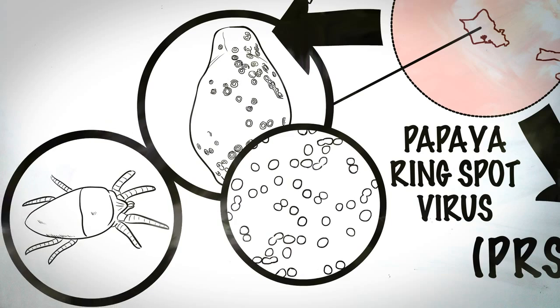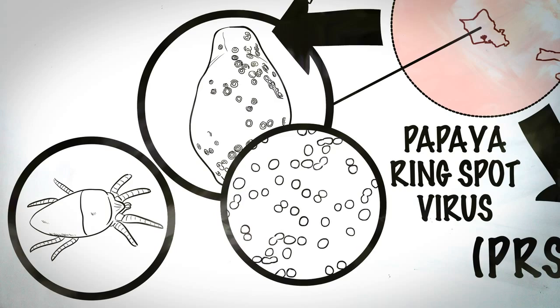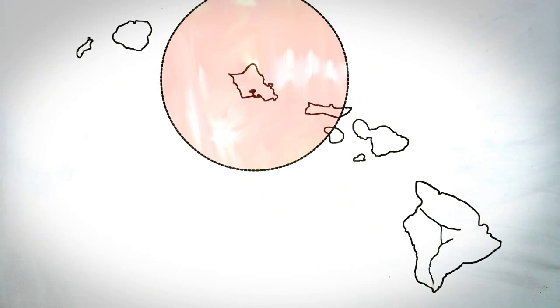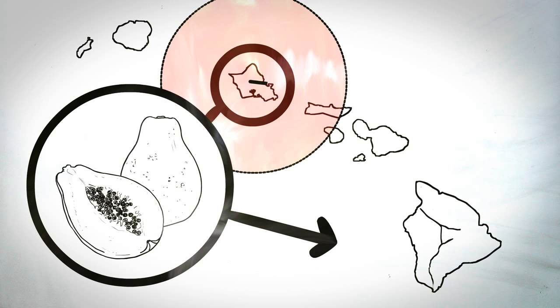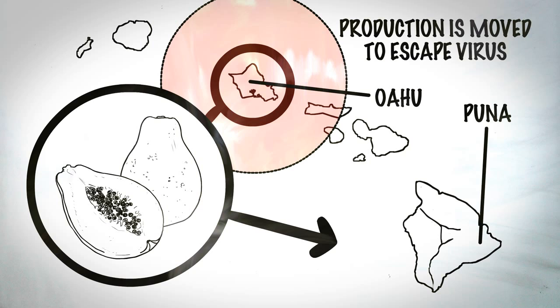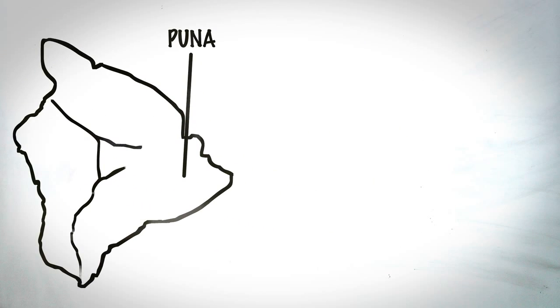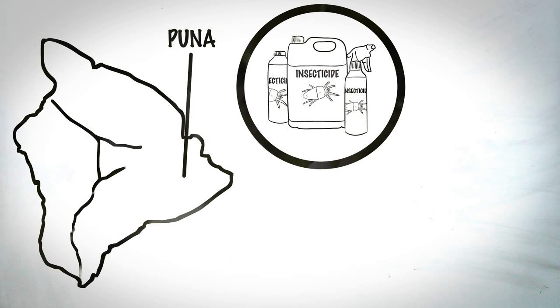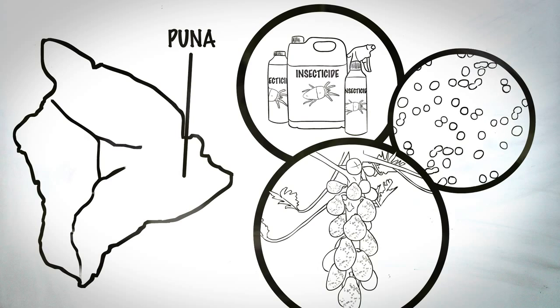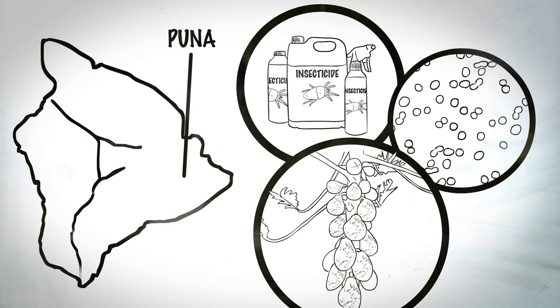PRSV is transmitted by insects that feed on the fruit. Many methods were deployed to try to stop the destructive virus. In the early 1960s, farmers moved papaya production from the island of Oahu to the Big Island of Hawaii in the Puna District. The virus ultimately reached Puna. Other methods didn't work either, including using insecticides for the insects spreading the virus, giving the plants a mild strain of the virus to create natural inoculation, or destroying infected trees. The virus just continued to spread.